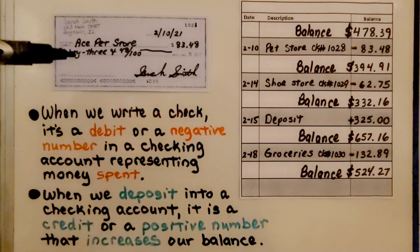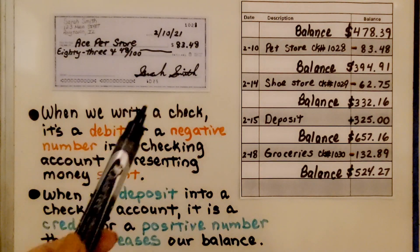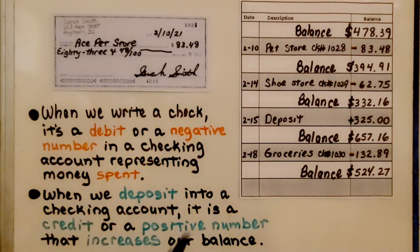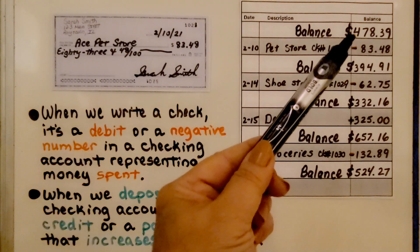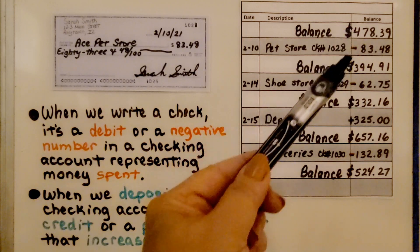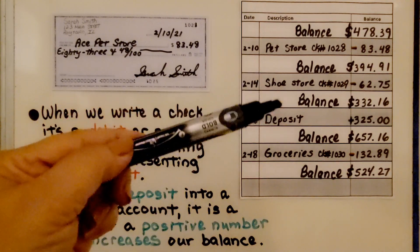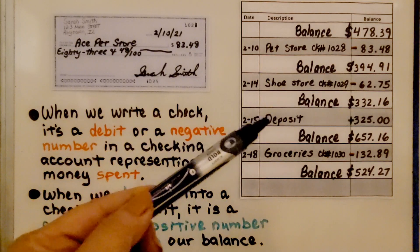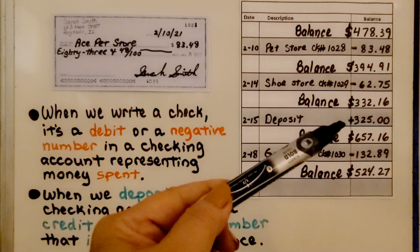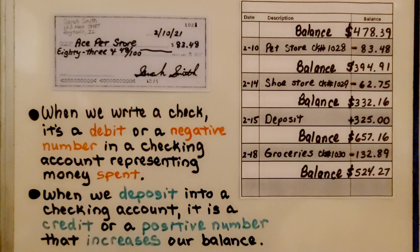On the line below who the check is written out to, you write it in word form: 83 and 48 over 100 — 48 hundredths for the cents. Her balance was $478.39. Then she wrote that check to the pet store, subtracting it from her balance, leaving $394.91. For every check she wrote, we subtract that amount. Then she deposited $325, so her balance went back up. When she wrote a check, her balance decreased; when she deposited money, her balance increased.